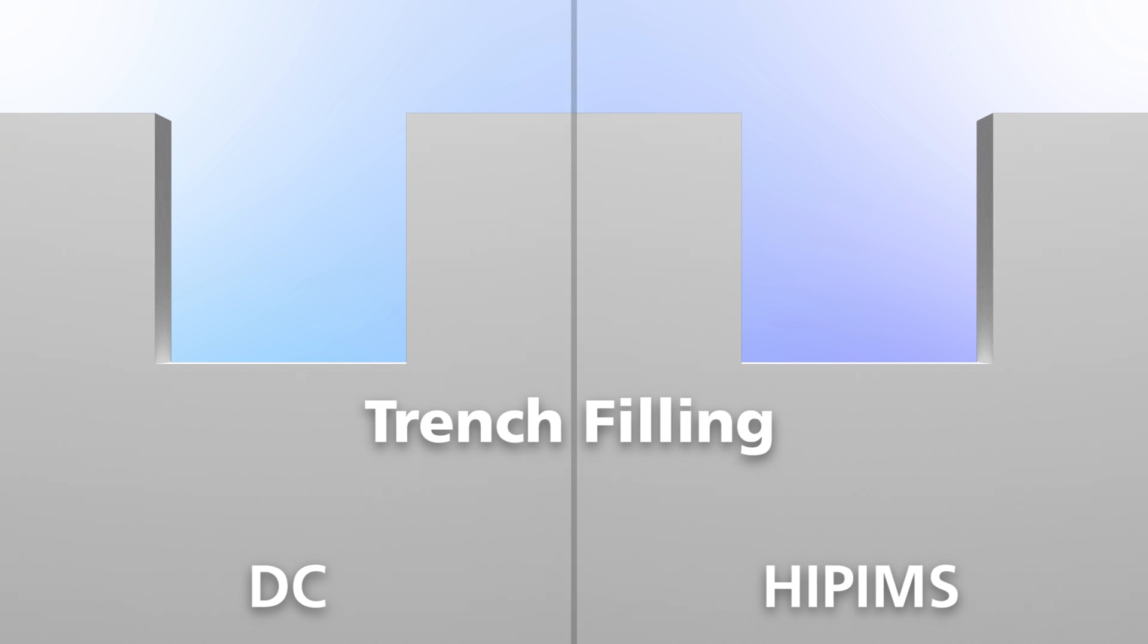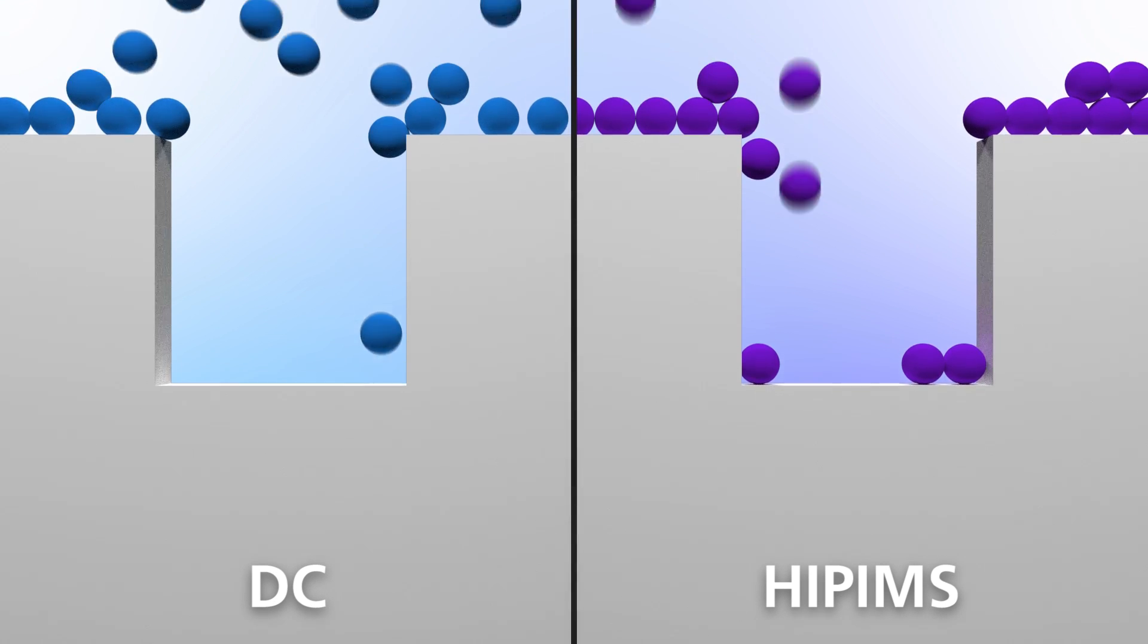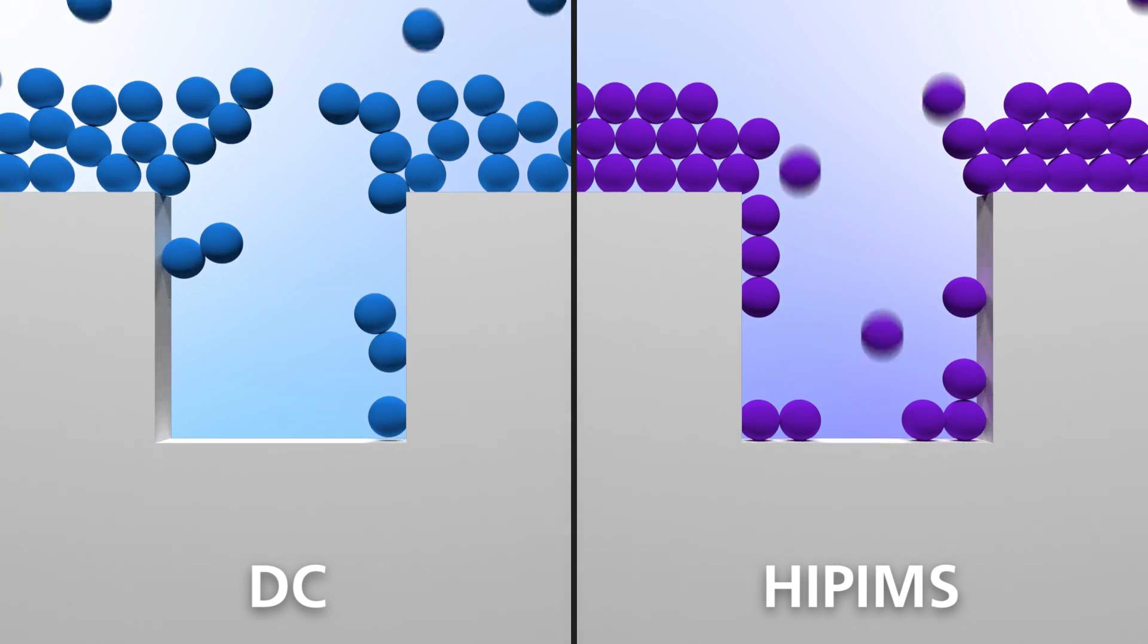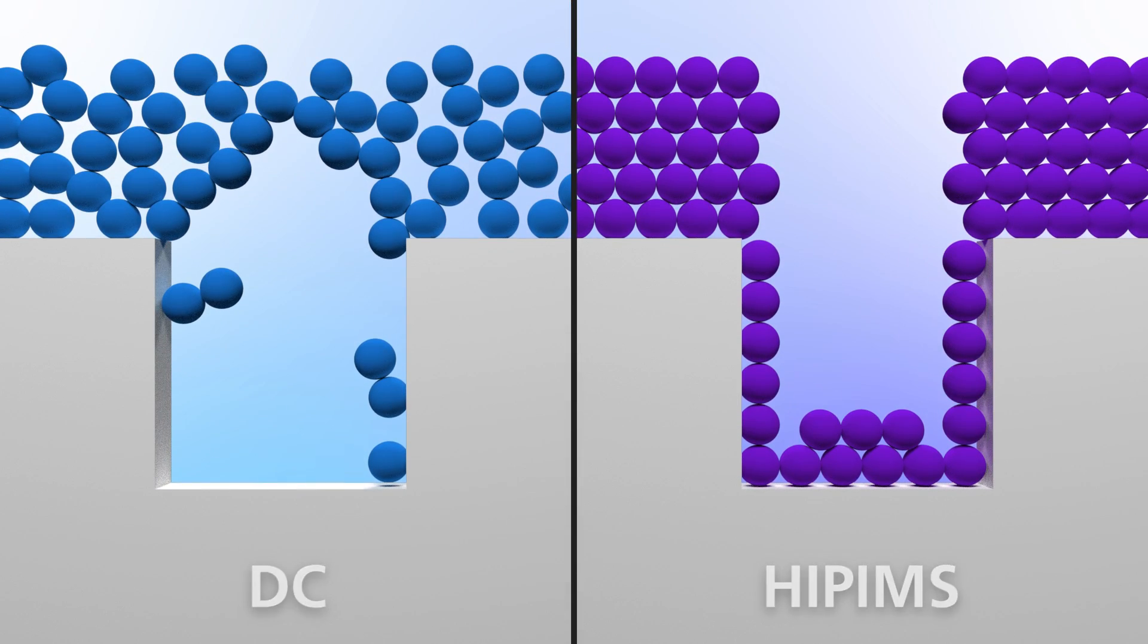For complex surfaces, significant improvements can be achieved in covering surfaces which are not parallel to the sputtering target.